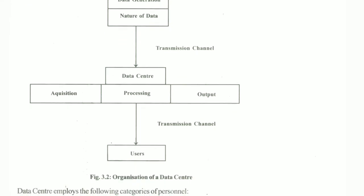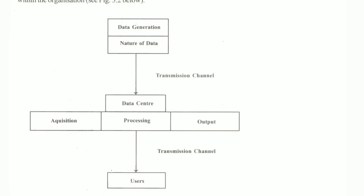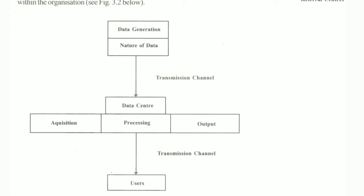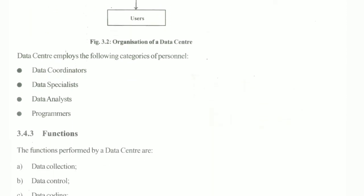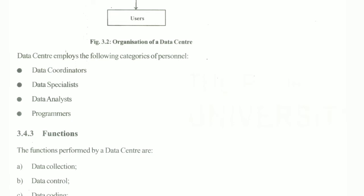Data is generated somewhere, and its nature determines how it is transferred through a channel to the data center, where there is acquisition, processing, and output. Then it reaches the user through another channel. A data center employs the following categories of personnel: data coordinator, data specialist, data analyst, and programmer.